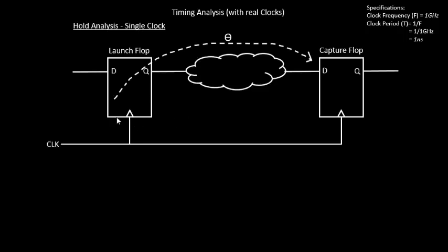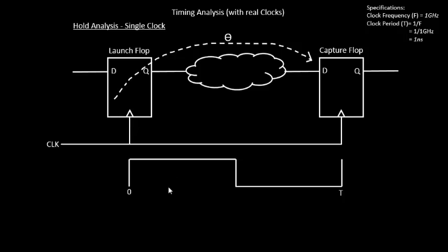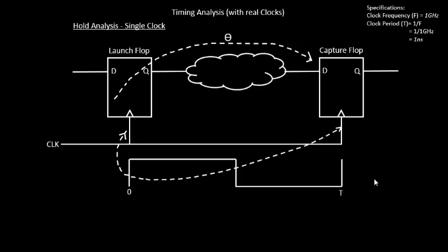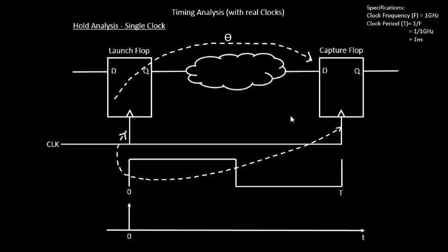We have the circuit with a launch flop, a capture flop, and a combinational delay of theta. Unlike setup timing analysis where we sent one edge to the launch flop and the next edge to the capture flop, in hold timing analysis we send the same edge to both the launch flop and the capture flop. The hold condition says that the combinational delay theta should be greater than the hold time of the capture flop.